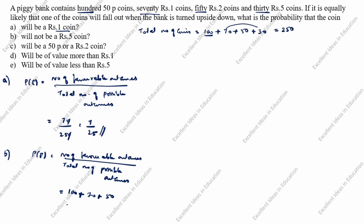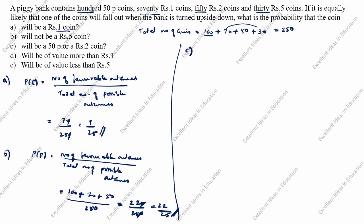Don't add the rupee 5 coin. Divided by the total number of possible outcomes, which is 250. 100 plus 70 is 170, plus 50 is 220. So 220 divided by 250 — cancel the zeros — the answer is 22 by 25.